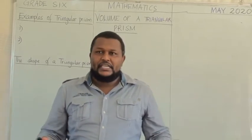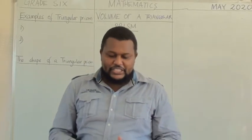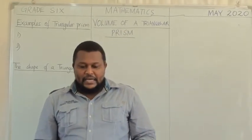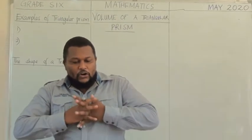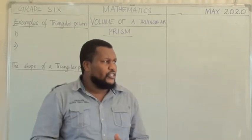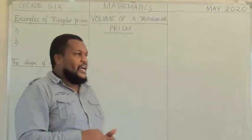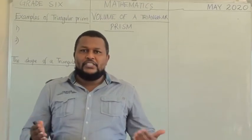Volume, as we said the last time I was with you, is the space occupied by a substance or an object. Today I am going to take you through triangular prisms, and before that I would like us to state the examples of triangular prisms.